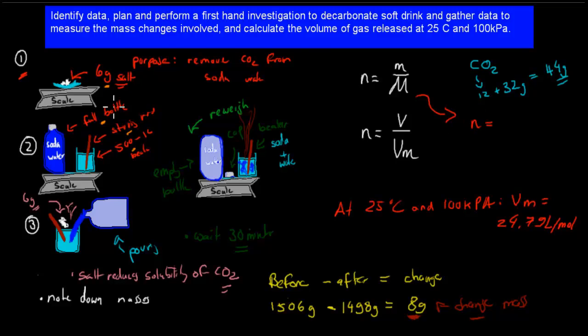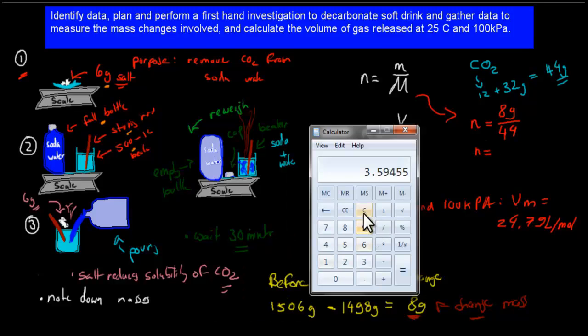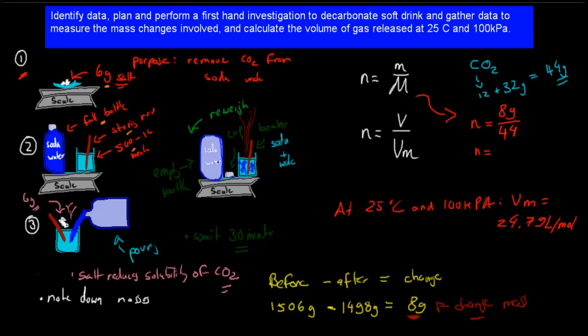So n is what we want. And we have 44 is our molecular weight for carbon dioxide. That's what has escaped. Carbon dioxide escaped. That's one mole, and we know that 8 grams have escaped. So now we can calculate how much moles we actually have. So n equals 8 divided by 44, 0.18. So we know that 0.18 moles has escaped.